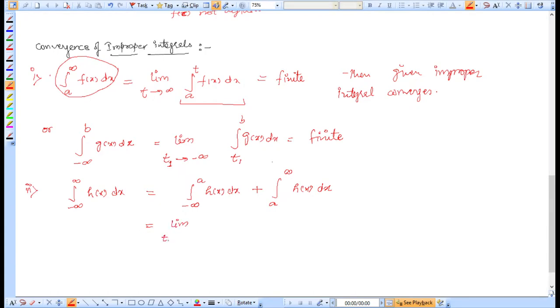So the same method applies. We take limit t1 tends to minus infinity, integral from t1 to a of h(x)dx, and limit t2 tends to infinity, integral from a to t2 of h(x)dx. These are the two limits we need to simplify.